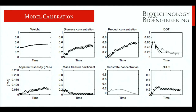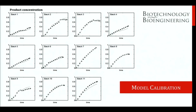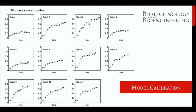If we look at the model calibration, we can see that there is a good fit to the experimental data. In particular, if we look at the biomass concentration and the product concentration, we see there is a very good fit to the data. This shows the full model output for one batch, but we also see that for 11 batches which we have available, there is a good fit for both the product concentration and also the biomass concentration.